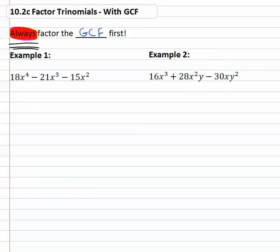So if we see an example like 18x^4 - 21x^3 - 15x^2, we're not going to start by jumping right to the factors. Instead, we're going to start by first trying to identify is there a common factor on each of these terms.